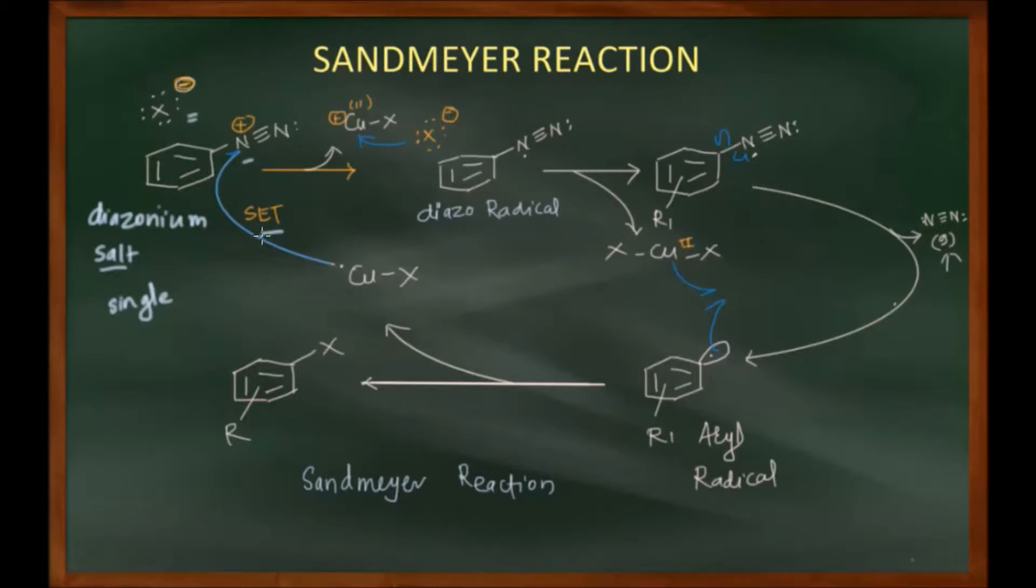Now the mechanism goes something like this. The first step is the single electron transfer reaction between cuprous chloride and the diazonium salt. Cuprous chloride is our reagent in this reaction. The first step is a single electron transfer reaction from copper to this nitrogen. Once this single electron transfer takes place, we will be getting diazoradical which is shown here.